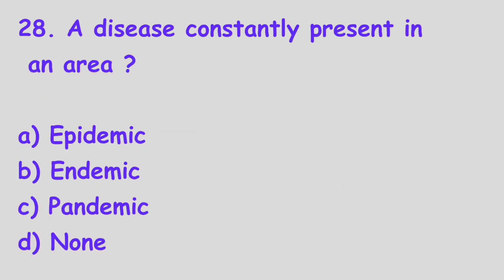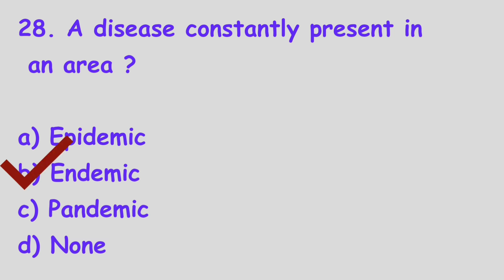Next question. A disease is constantly present in an area: Option A, Epidemic; Option B, Endemic; Option C, Pandemic; Option D, None of the above. The right answer is Option B, Endemic. A disease constantly present in an area is called an endemic disease.